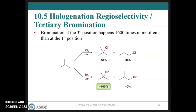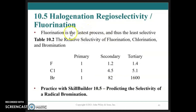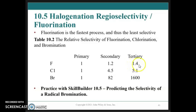Looking at the faster reaction with fluorine: fluorine is the fastest process and the least selective. The distribution of primary, secondary, and tertiary fluorination products shows very little selectivity — about four to five times less than with chlorine. The transition state for fluorination is even closer to the reactants than it was for chlorine, and very little charge separation has developed at the point that hydrogen is abstracted by fluorine.